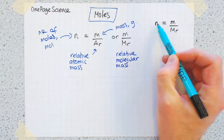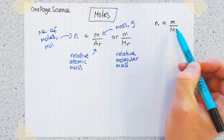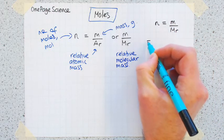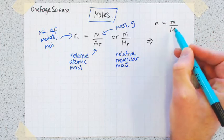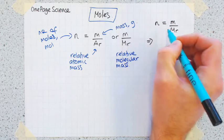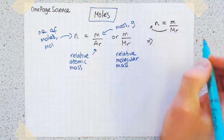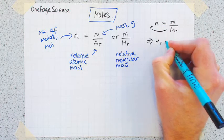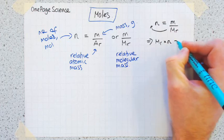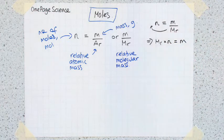So n equals m over Mr. If we want to rearrange that to work out the mass - for example we might know the number of moles, we might know the Mr, but we want to work out the mass - if we rearrange this equation, you can move the Mr from down here up to there. Mr times by n equals m.